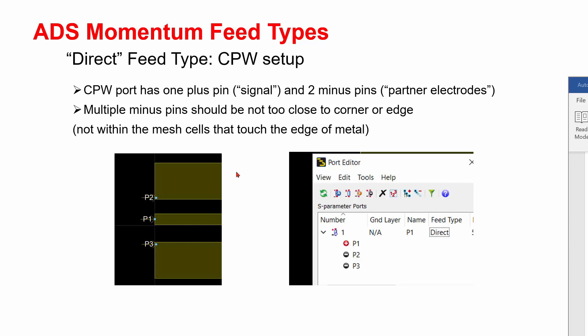Here is an example showing how they set up pins for CPW structure. The port has one plus pin and two minus pins. If you take a look at these two minus pins, they are placed inside of the metal to avoid the edge pin.